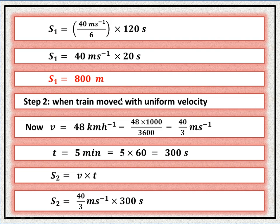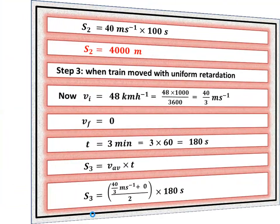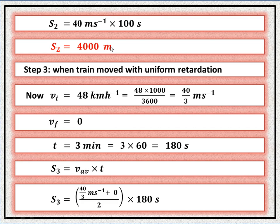Step 2: the train moves at uniform velocity of 48 km/h, which equals 40/3 m/s. Time is 5 minutes = 300 seconds. S2 = velocity × time = (40/3) × 300 = 40 × 100 = 4000 meters. The train covers 4000 meters at uniform velocity.